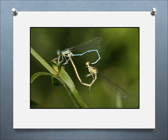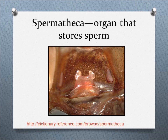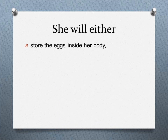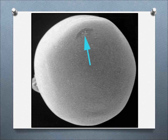During the mating season between male and female insects, sexual reproduction is normal. The male gives sperm to the female, and the sperm is stored in a special sac on her abdomen. Depending on the insect, the female will lay eggs with her abdominal appendage called an ovipositor, store the eggs inside her body, or grow the live animal inside her body. As the eggs are laid by oviparous insects, the eggs meet the sperm on the way out of the female in a tiny opening called the micropyle. This fertilizes the eggs, and eventually the eggs will hatch into baby larva.